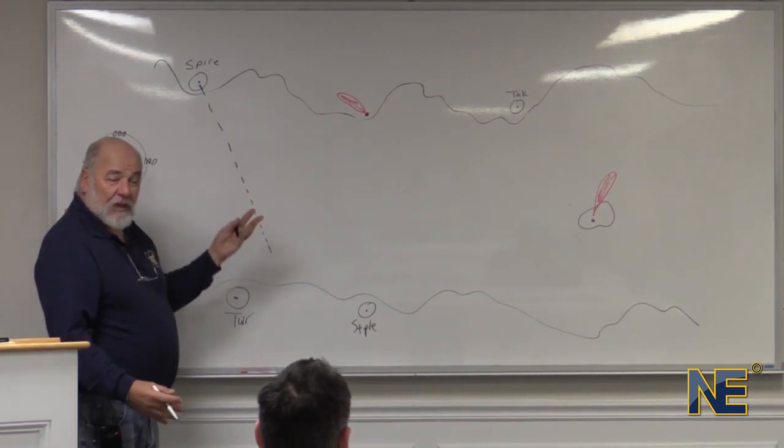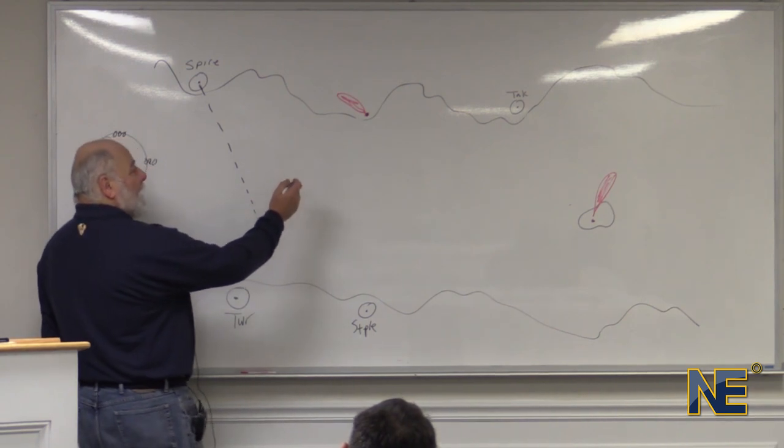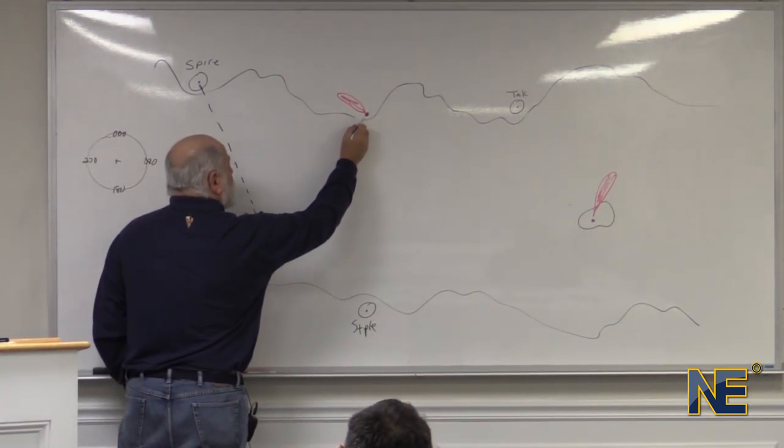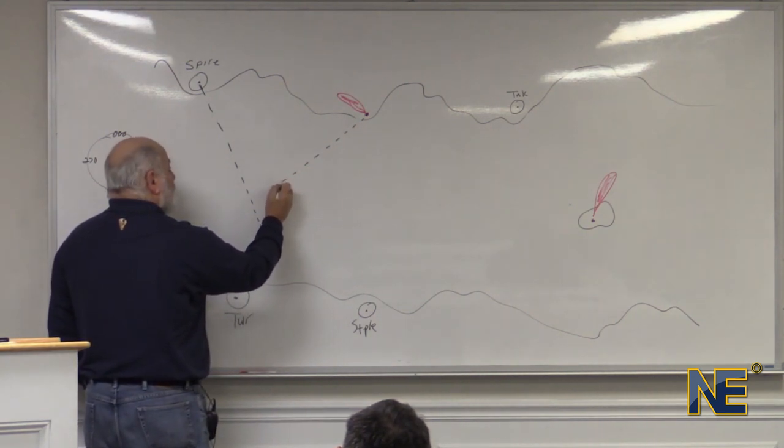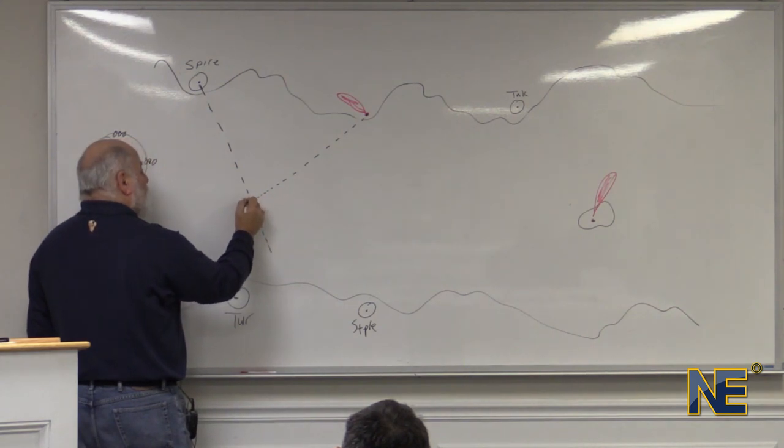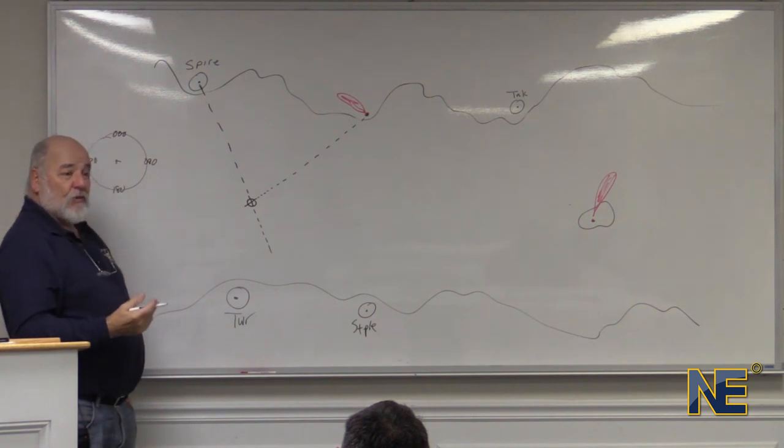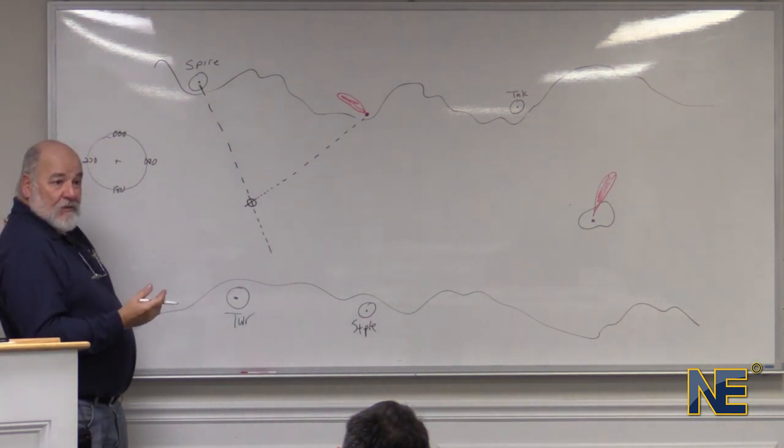And we pick another landmark. In this case we'll take this light up here and if we thought that light was about 45 degrees, we would draw a line from that light to us about 45 degrees away. And we would be somewhere on that line and where it crossed our first line of position, that's our fix. That's where we are. That's as simple as crossed bearings need to be.